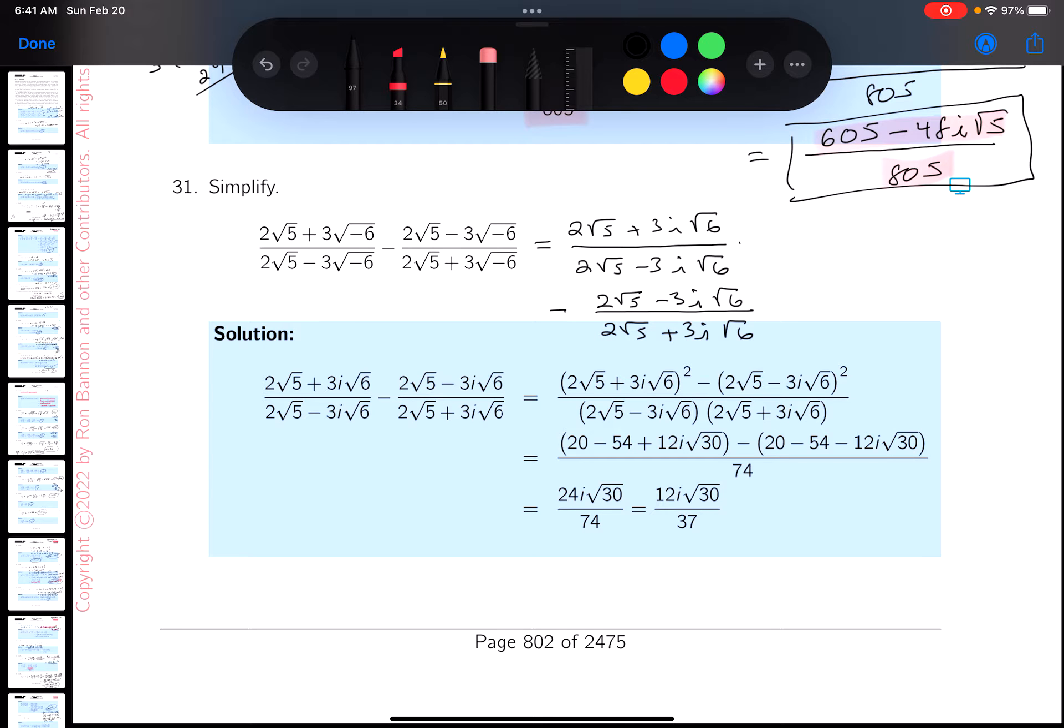I noticed kind of immediately that there's some nice features about this problem. I'm going to multiply by something, a builder in this case. And I'm going to multiply this one by 2 root 5 plus 3i root 6, and I'm going to multiply this one by 2 root 5 minus 3i root 6. I'm going to multiply the top by the same thing I'm multiplying the bottom.